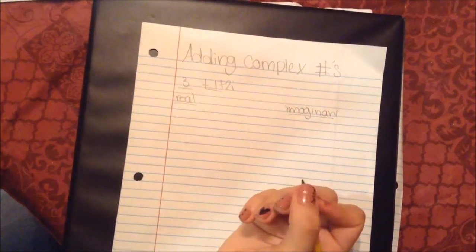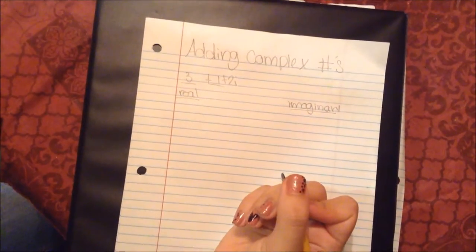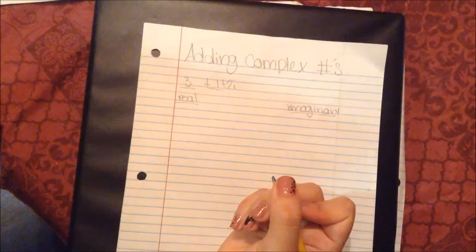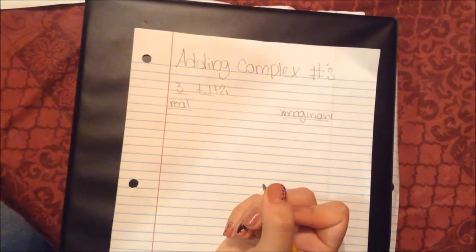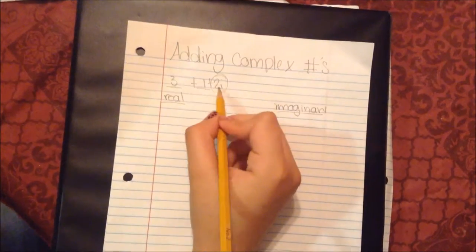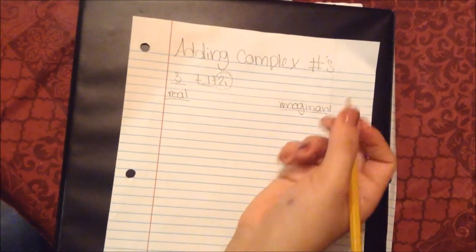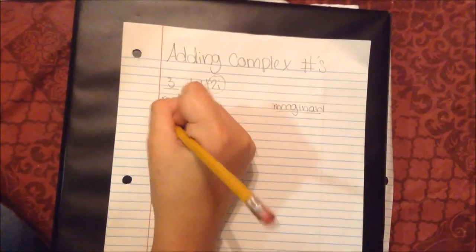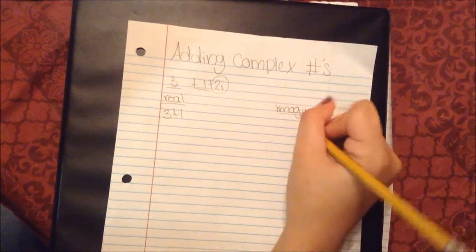An imaginary number is a multiple of i equals square root of negative 1. So this one contains an imaginary number. So these are the real numbers and this is the imaginary.